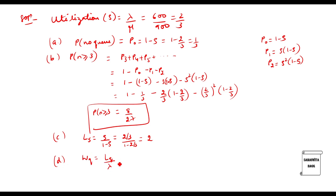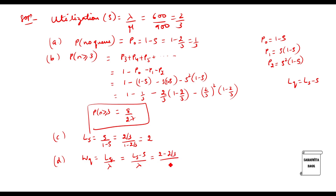The fourth one is the average time spent in the queue, Wq. The formula is Wq = Lq / lambda, where Lq = Ls − rho. So Wq = (Ls − rho) / lambda. Substituting Ls = 2, rho = 2/3, and lambda = 600, we get Wq = 1/450 hours.